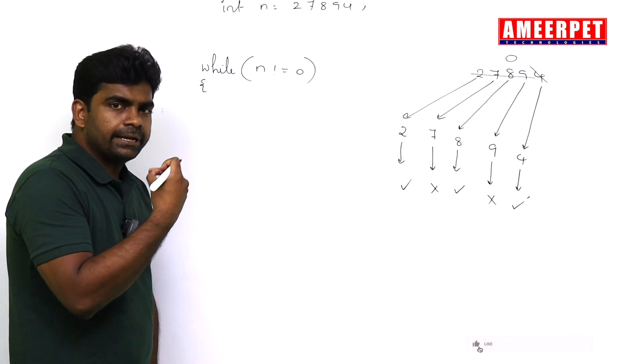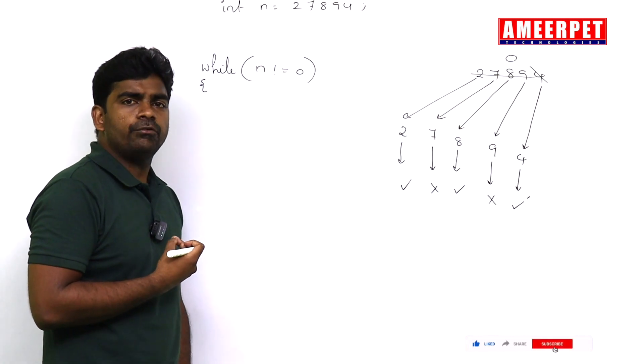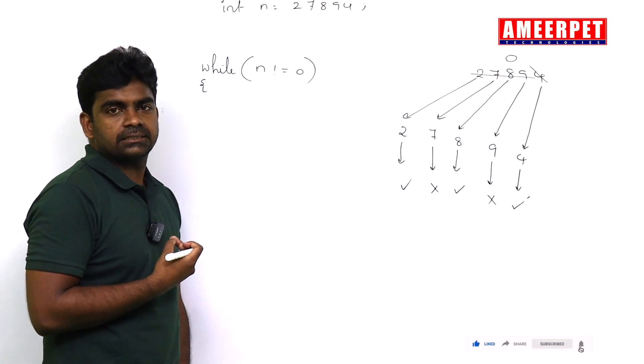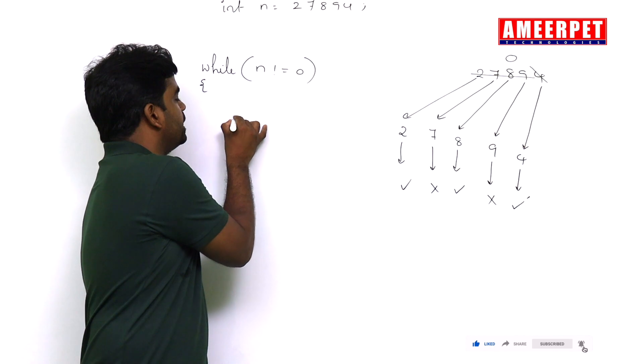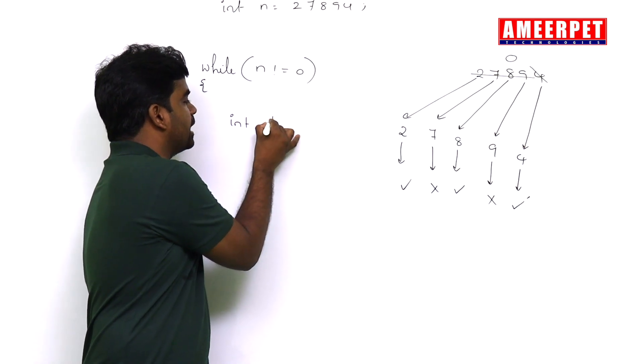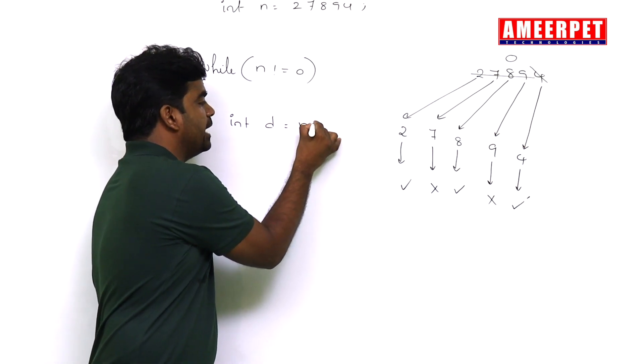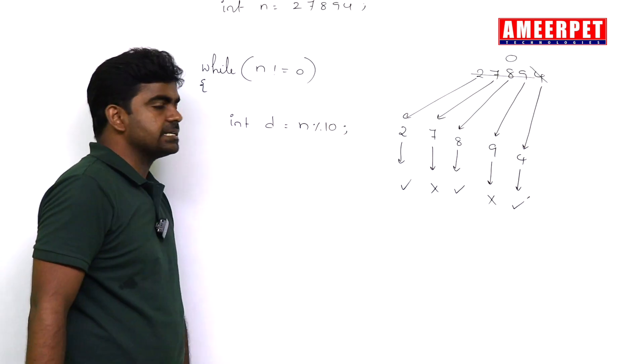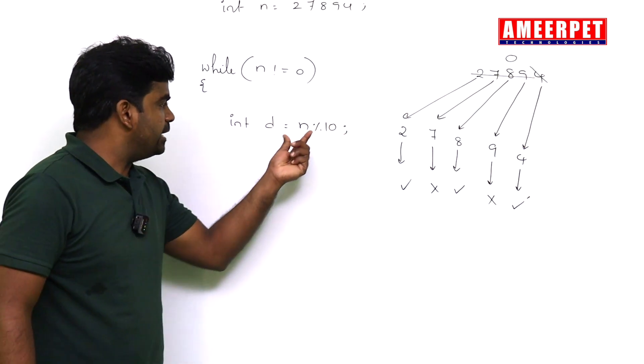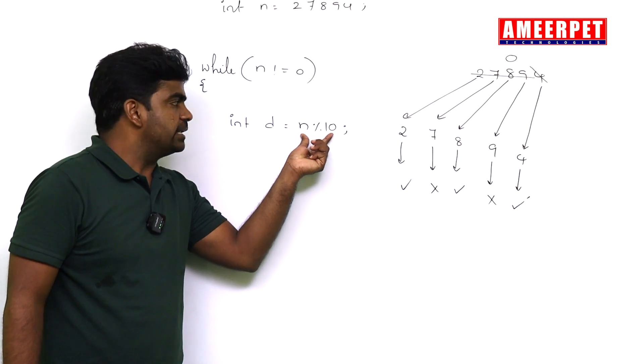The loop condition is while n is not equal to zero. First, you need to get the last digit. How do we get the last digit? Simply, digit d equals n mod 10. N mod 10 will give